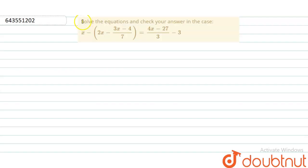Hello students, let us begin with the question. The question says solve the equation and check your answer. So x minus (2x minus 3x minus 4)/7 equals (4x minus 27)/3 minus 3. Let us begin.